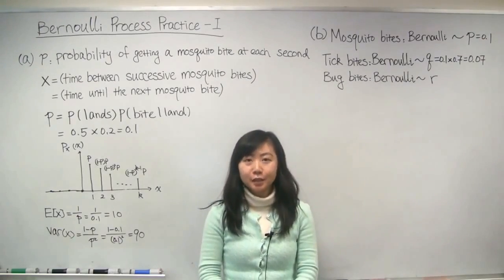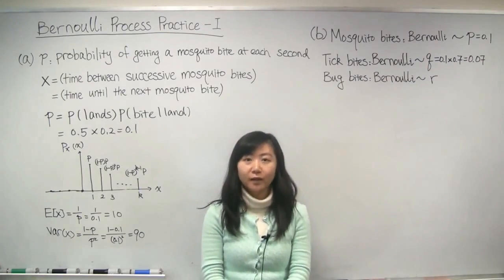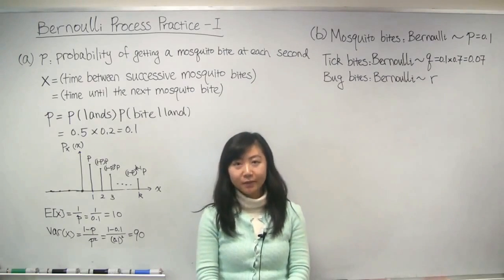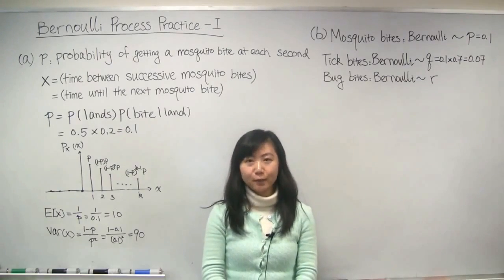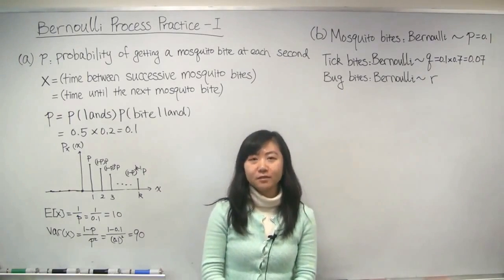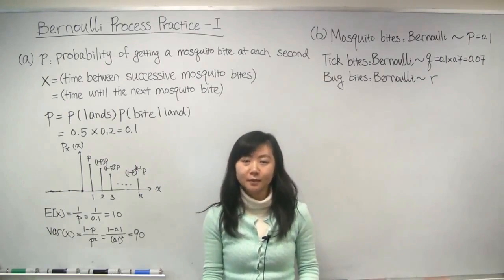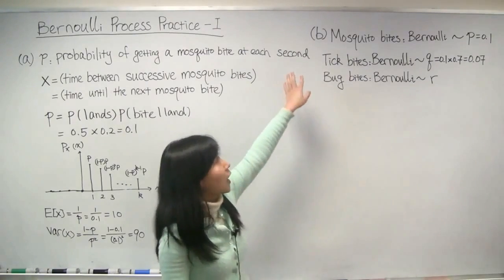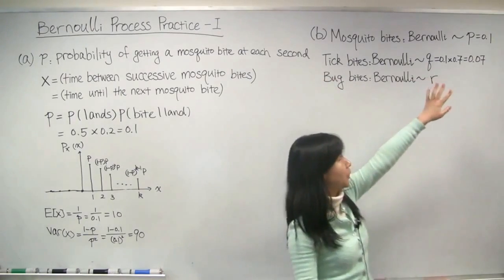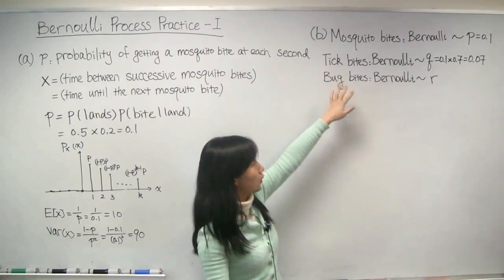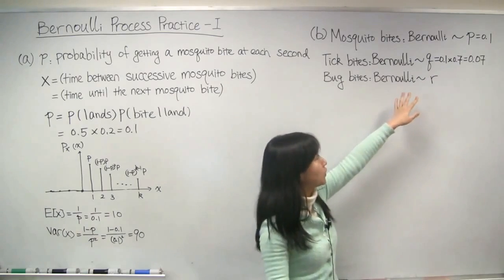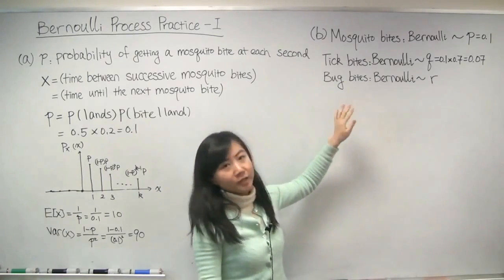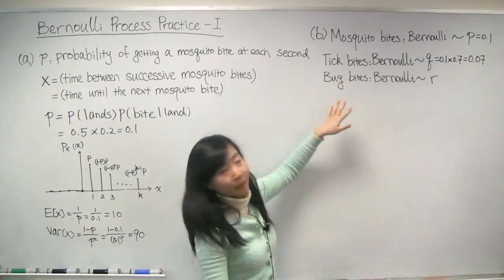The probability that a tick will land on your neck is equal to 0.1. And if a tick lands on your neck, the probability that it will bite you is equal to 0.7, and the probability that it will never bother you is equal to 0.3. All this happens independently among all ticks and all mosquitoes. Similar to part A, where mosquito bites occur as a Bernoulli process with parameter p equal to 0.1, here the tick bites also occur as a Bernoulli process with parameter q equal to 0.1 times 0.7, which is equal to 0.07.